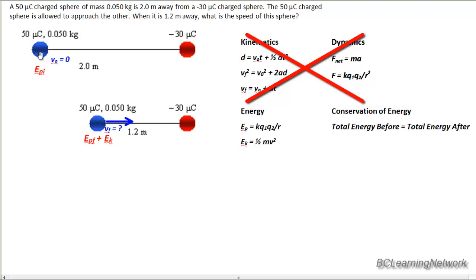So we see initially all I have is potential energy. Since the initial velocity is zero, remember we're pretending we're holding on to that blue charge and we're going to suddenly let it go. So all that exists is potential energy.